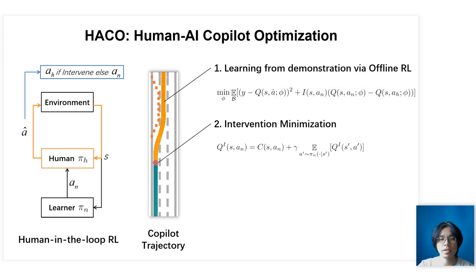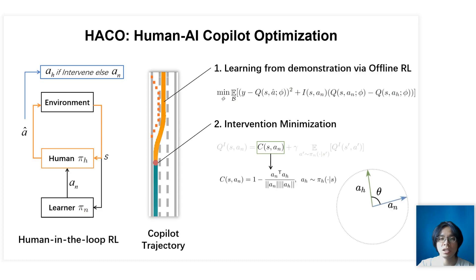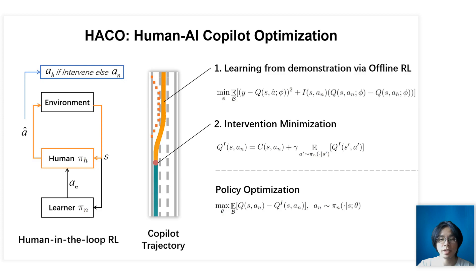The second technique is intervention minimization. It aims to reduce human burden by decreasing the takeover rate. Besides the Q function, we introduce another value function, QI, to estimate the expected accumulative intervention cost. The cost value is calculated according to a cosine similarity between the action of the agent and the action of the human. Combining these two value functions, the policy optimization goal can be summarized as the following equation: the first Q means choosing actions with high proxy Q value, and the second term is to minimize intervention and save human budget.